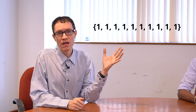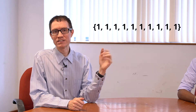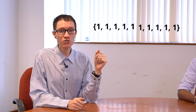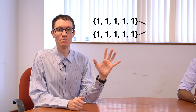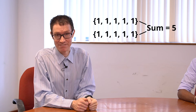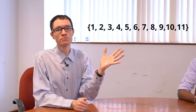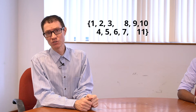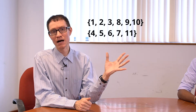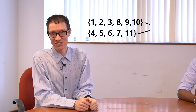It sounds easy, right? Let's start with ten ones. There is only one way to partition this set — each of the two partitions has five ones, and the sum of each of the subsets is five. What if I had a different set, like what's being shown right now? This one is a little bit trickier. One possible solution is shown such that the sum of each of the two subsets is 33.